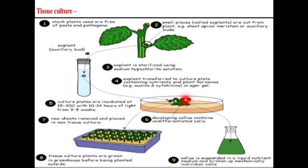The growth of the tissue in the nutrient medium is called multiplication, where the cells multiply to form new plant material.